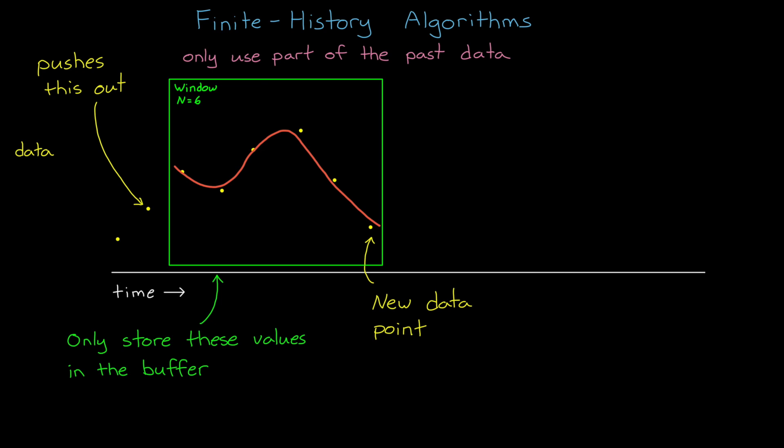Now at each time step, we use this entire buffer of data to estimate a linear model. In this way, this is very similar to linear offline methods because we're fitting a linear model to a complete set of data all at once by minimizing a least squares problem.